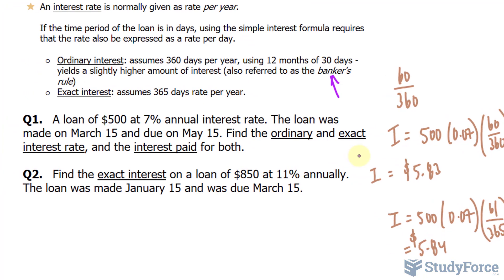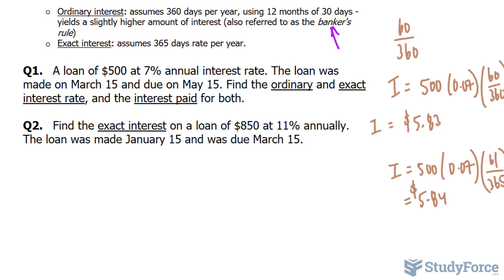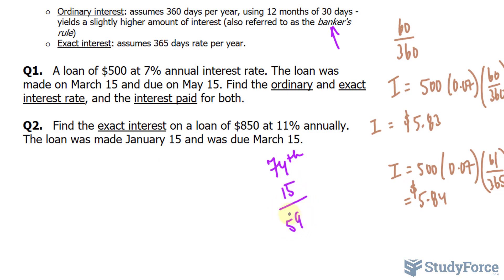Let's move on to question two. Find the exact interest on a loan of $850 at 11% annual interest. The loan was made on January 15th and was due on March 15th. You might use a table telling you the day of the year: March 15 lies on the 74th day, whereas January 15th is on the 15th day. Subtracting these gives us 59 days for the loan.